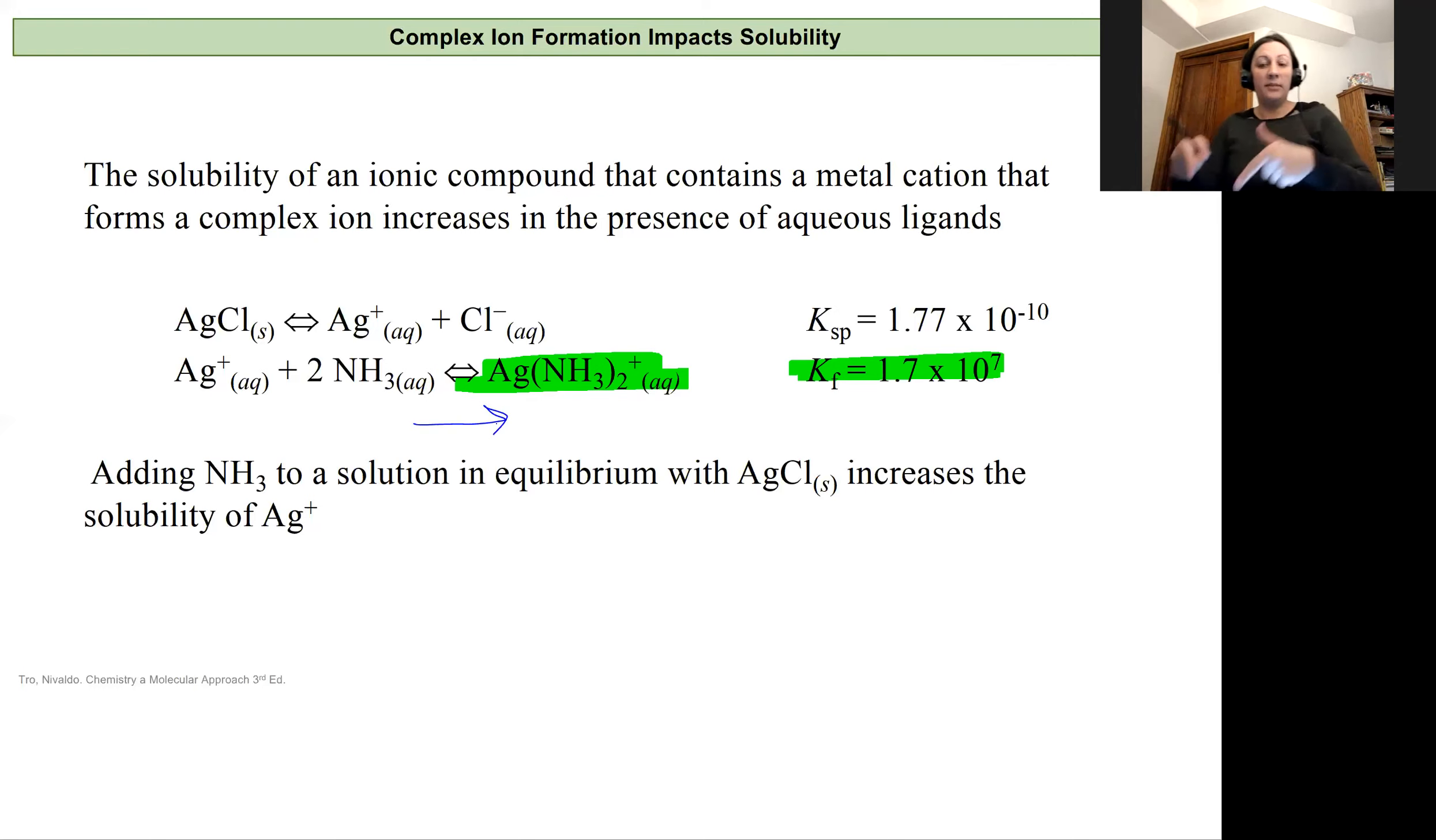As that complex ion forms, we're going to see that silver concentration decrease. And as that decreases, the equilibrium for our solubility product is also going to shift right. So we'll have these two equilibria that are combined together, that are connected. And as we form more of our complex ion, we'll create a driving force for more of our silver chloride to dissolve.